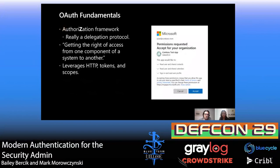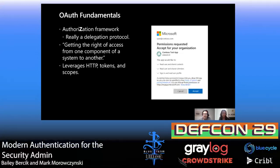OAuth2 is an authorization framework—not about authentication, but about authorization. It's a delegation protocol: getting the right of access from one component of a system to another. The OAuth consent dialog in Azure AD shows an application called Contoso Test App asking for the ability to read the user's contacts, calendar, and profile. You've likely seen something similar on your mobile phone when installing an app. OAuth is built to leverage HTTP and uses tokens and scopes to communicate this information.